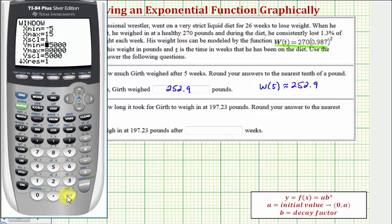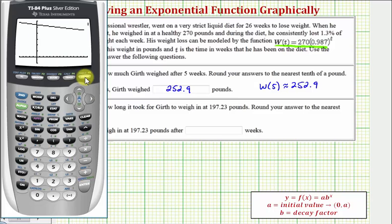And now for the vertical axis or the y-axis. We know the starting weight was 270 pounds, so let's have the y minimum be, let's say, negative 50. Enter. And the y max be, let's say, 300. Let's change the y scale to 50. Now let's press graph and see how we did. So there's the exponential decay function.